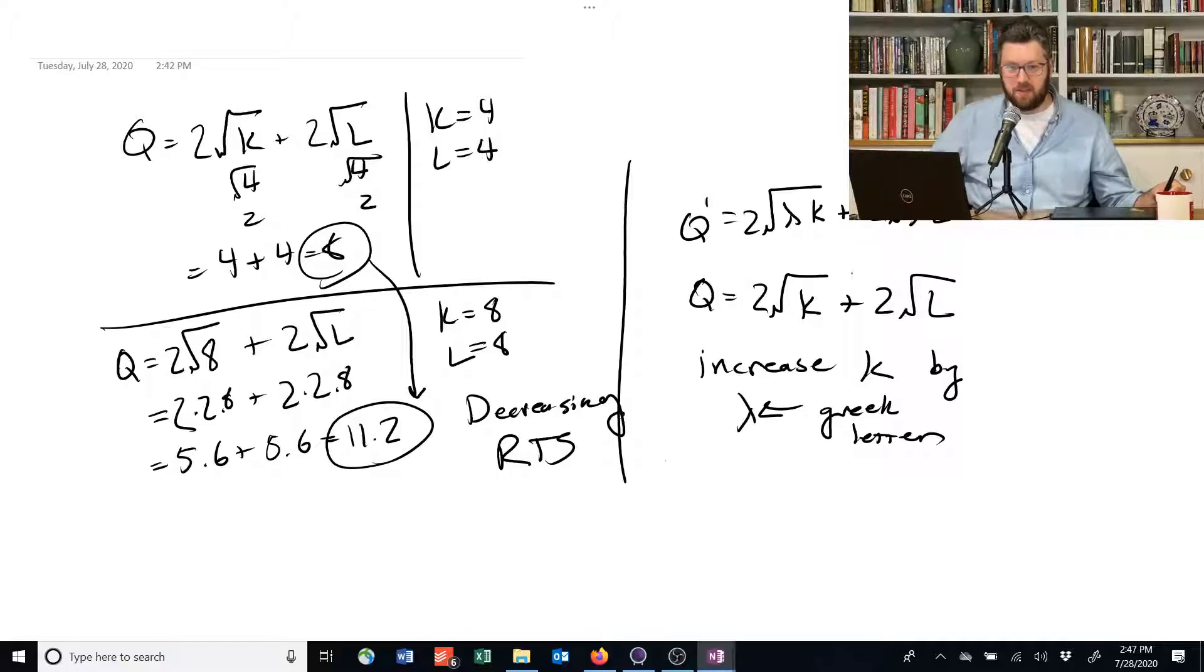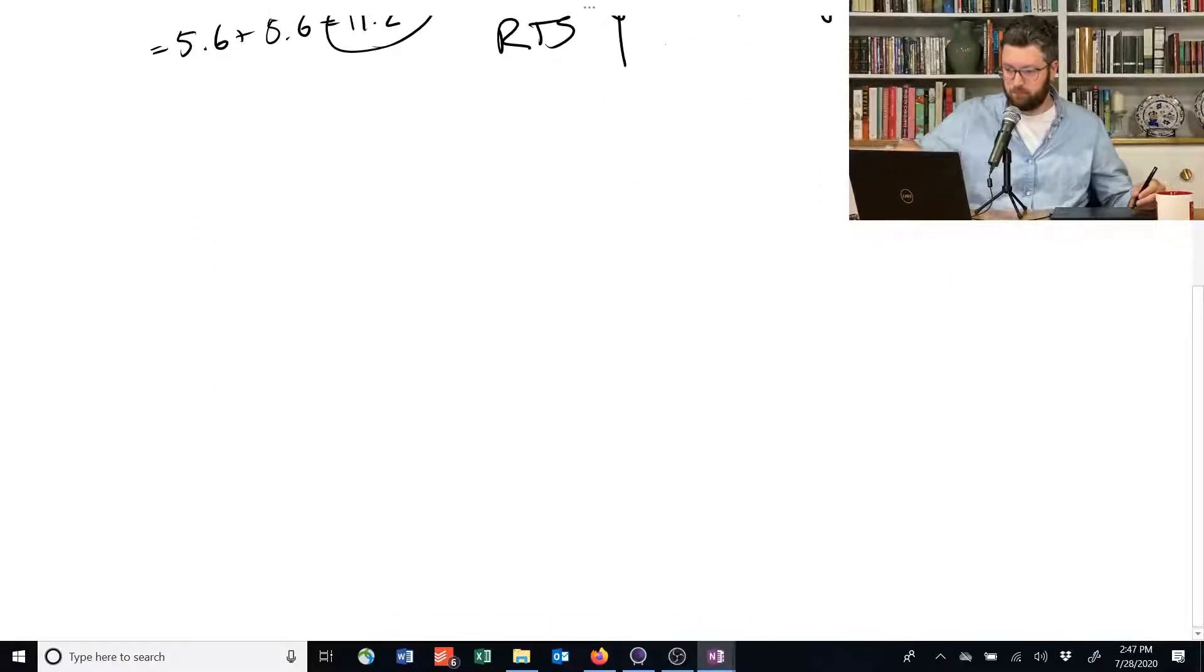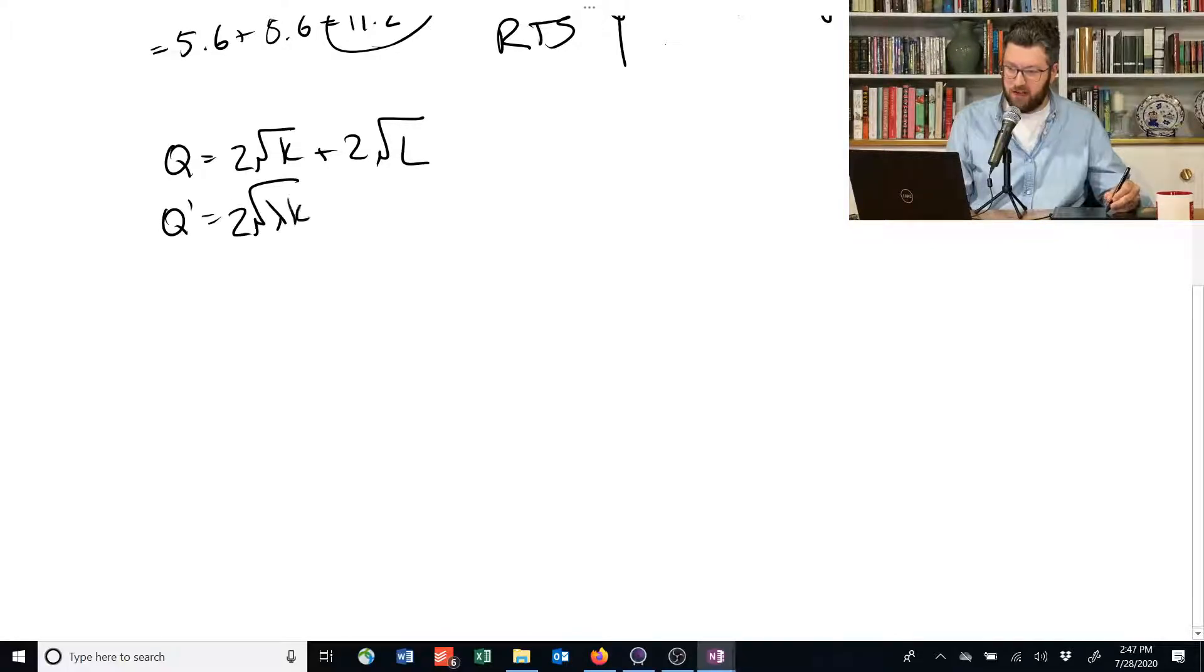I see that you can't see that. Let me try down here. We're going to go to Q, this is our original one, and here is our Q prime, where we've scaled K and L by a constant factor, lambda.